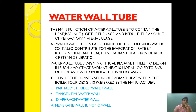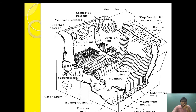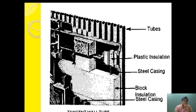Water wall tubes are provided all around the boiler shell plating. They not only conserve the heat but also prevent heat from reaching the shell plating, reducing the amount of refractory material needed and helping with bulk steam generation as the water inside evaporates.